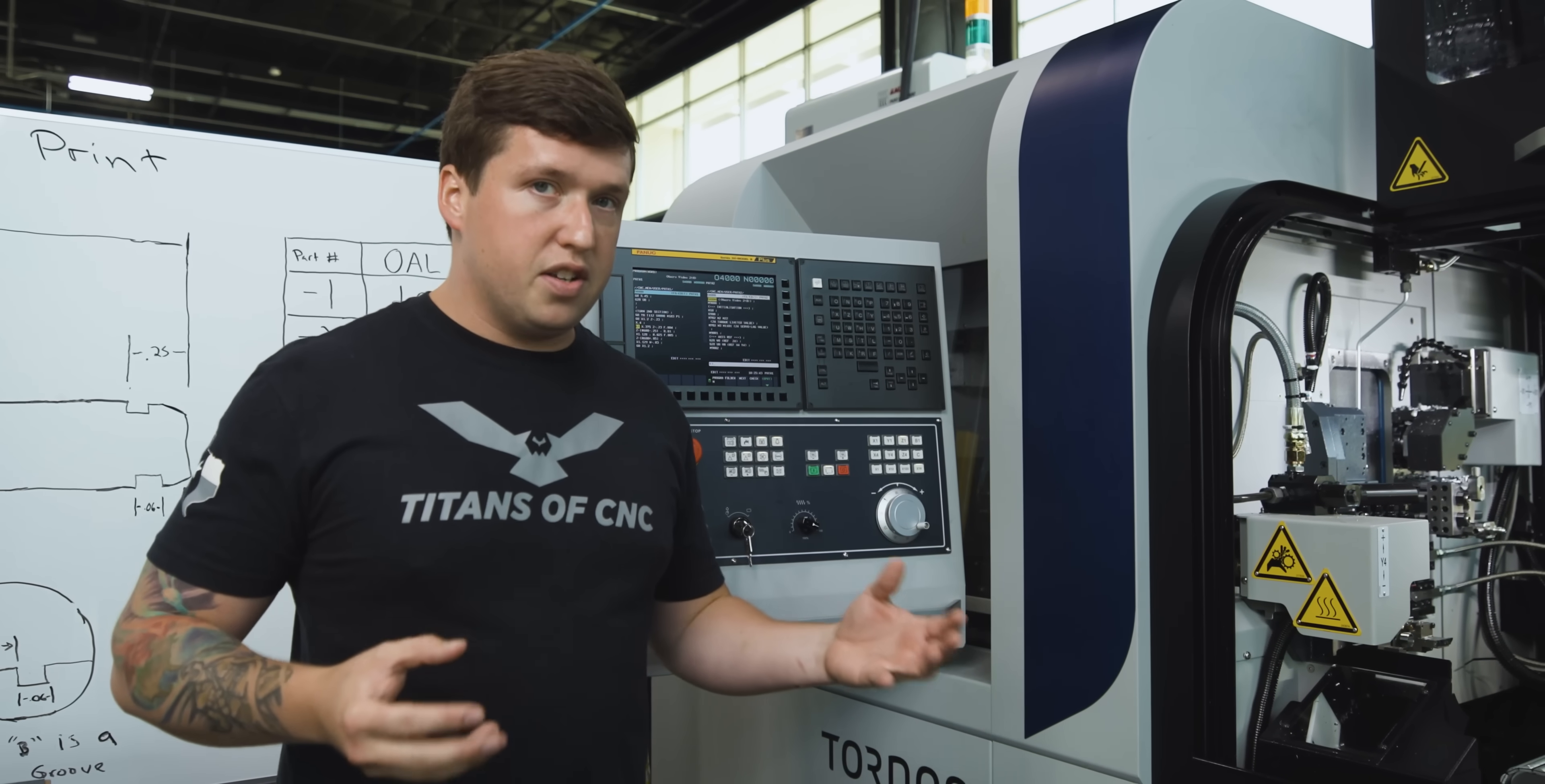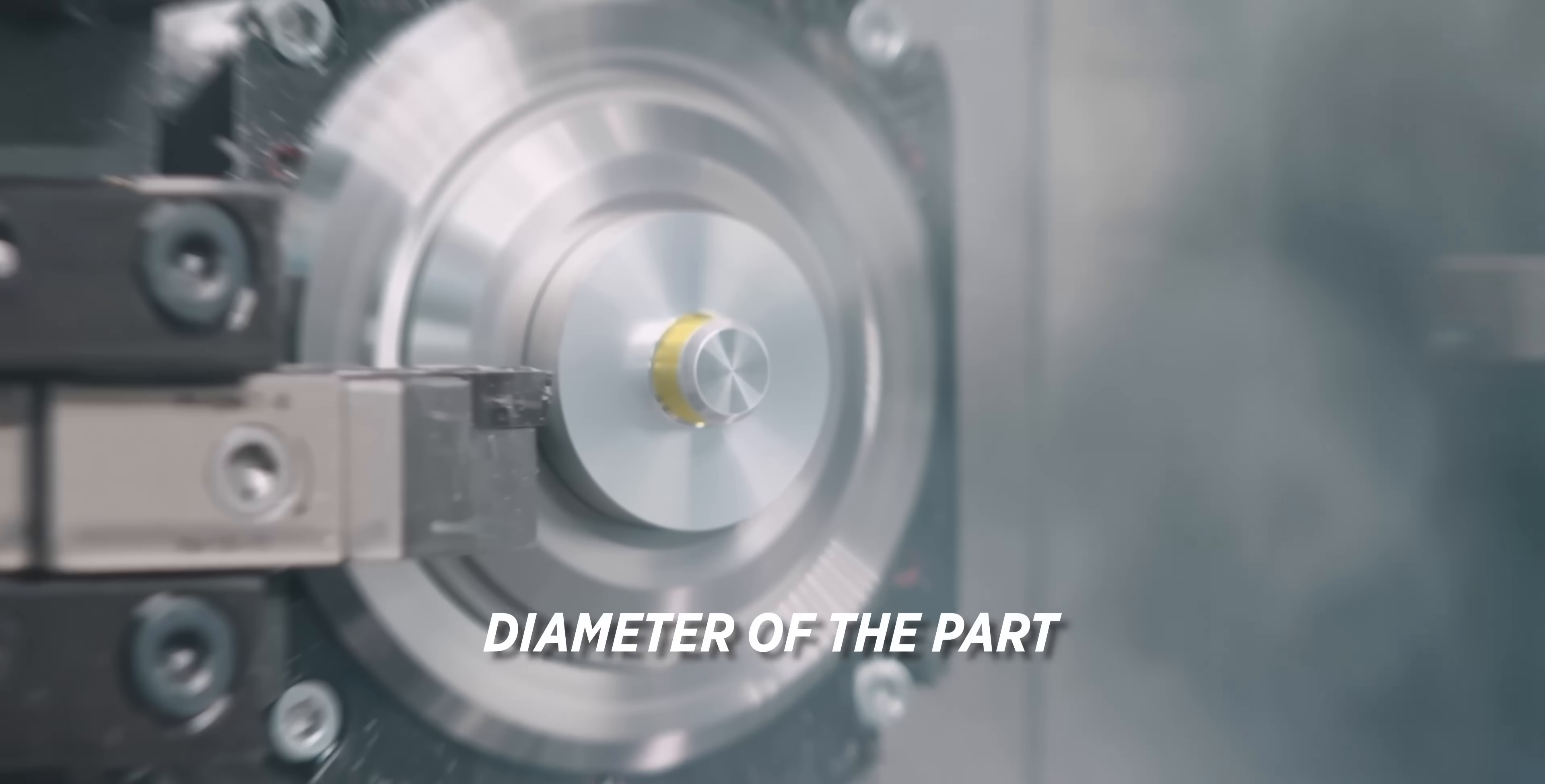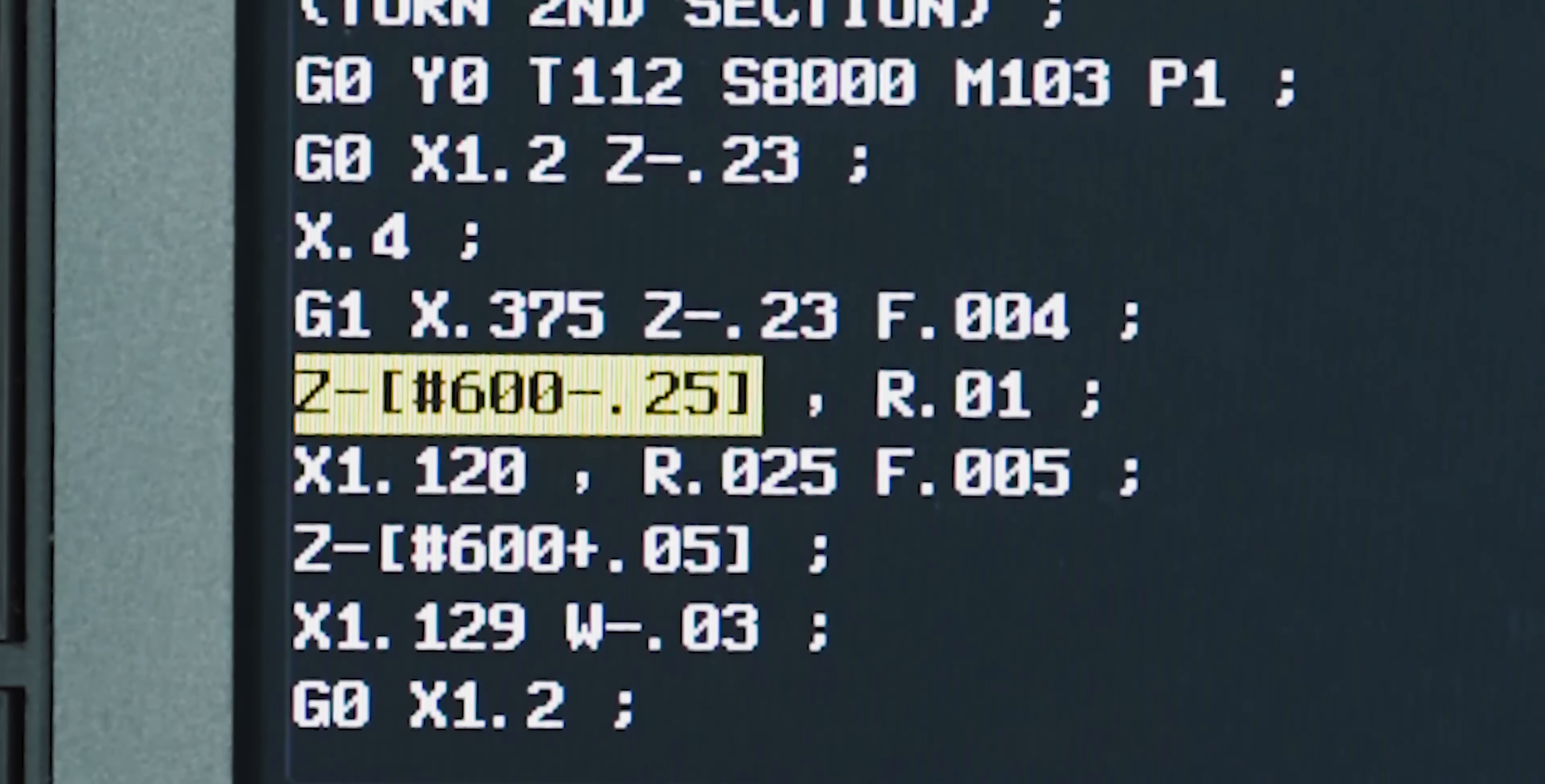Now we're doing our second turn section, so we need to have the macro affect how long we turn. That happens right here. I feed to X of .375, which is our diameter, the OD of the part. Then you're going to see I'm going to Z of minus pound 600 minus .250.